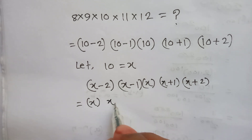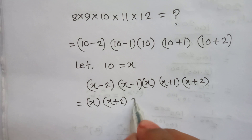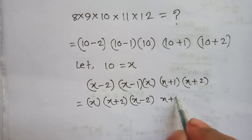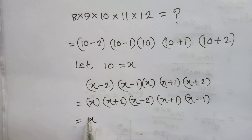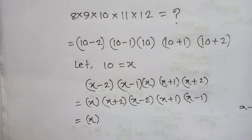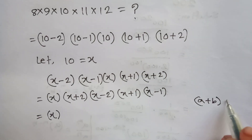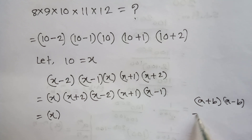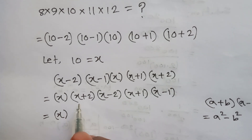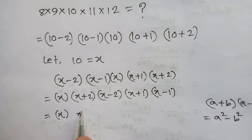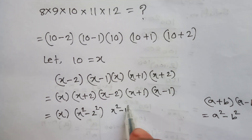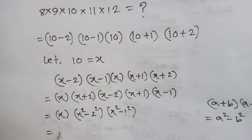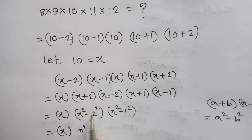Rearranging, we get x times (x plus 2)(x minus 2) times (x plus 1)(x minus 1). Using the identity (a plus b)(a minus b) equals a squared minus b squared, we get x times (x squared minus 4) times (x squared minus 1).